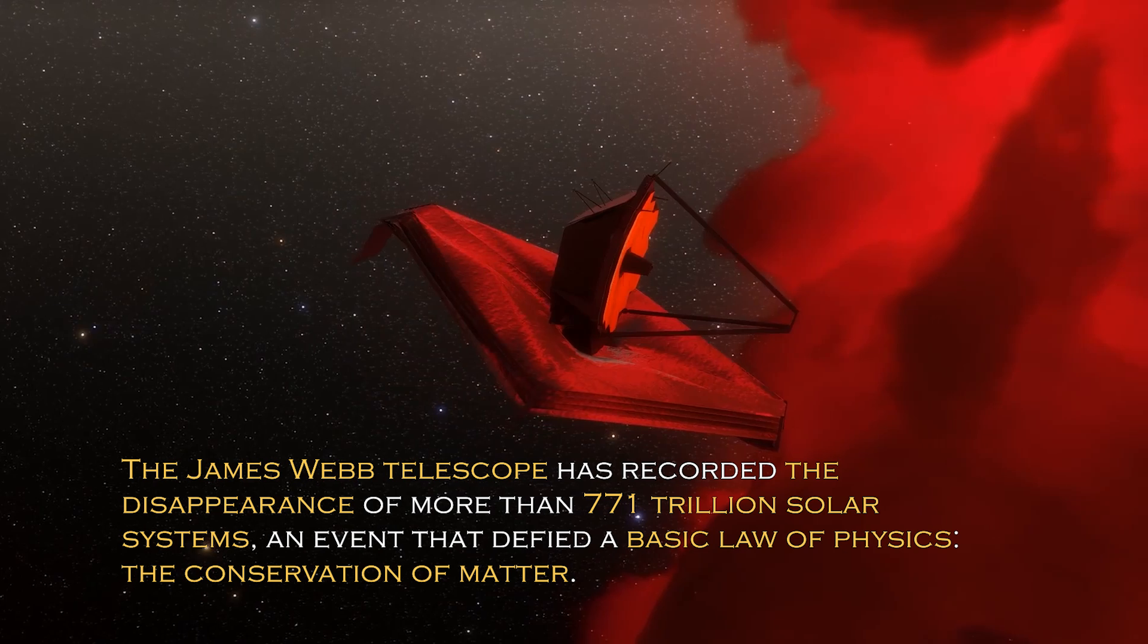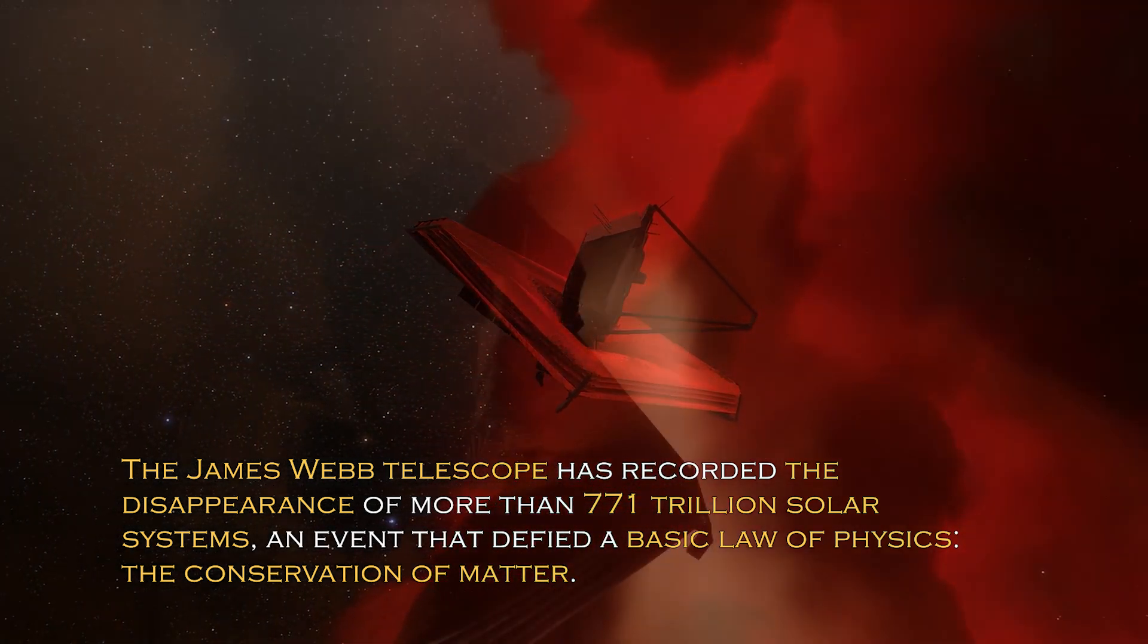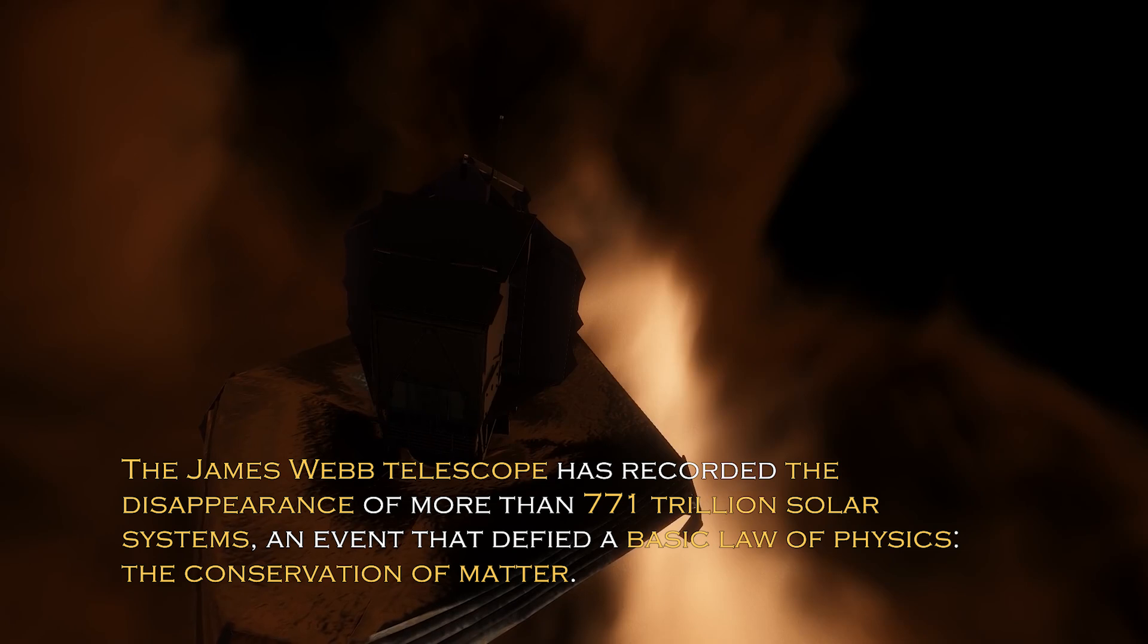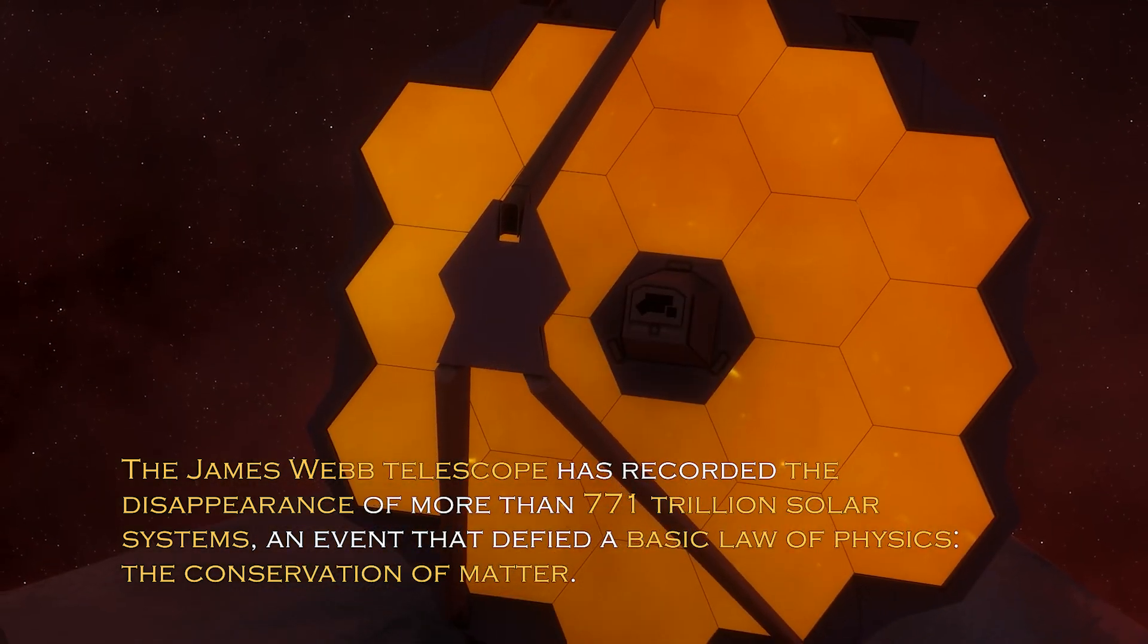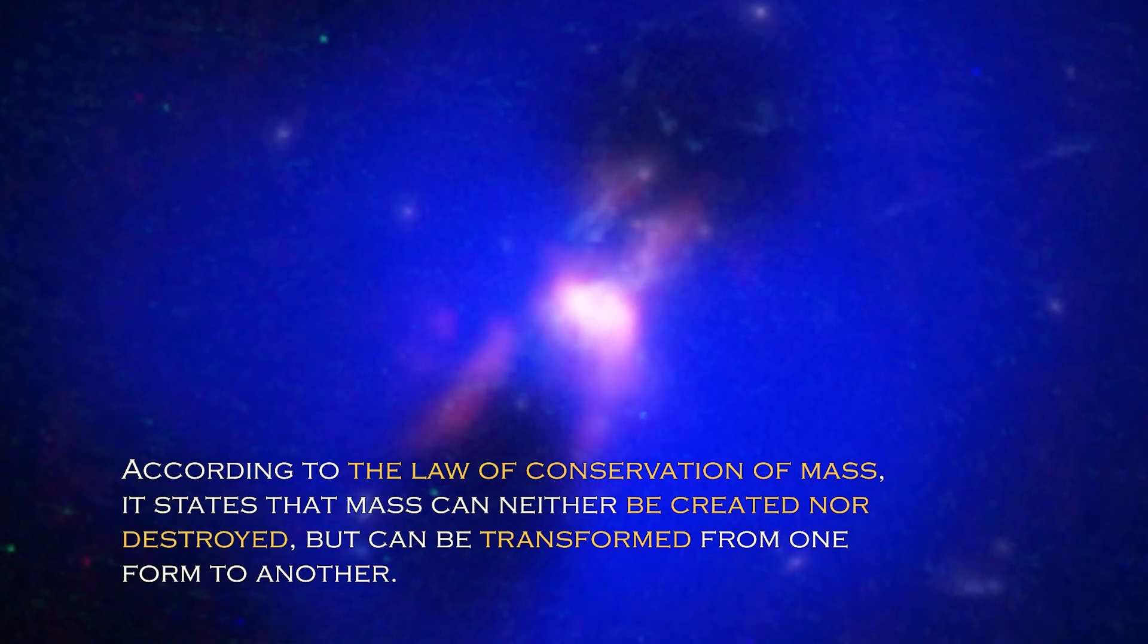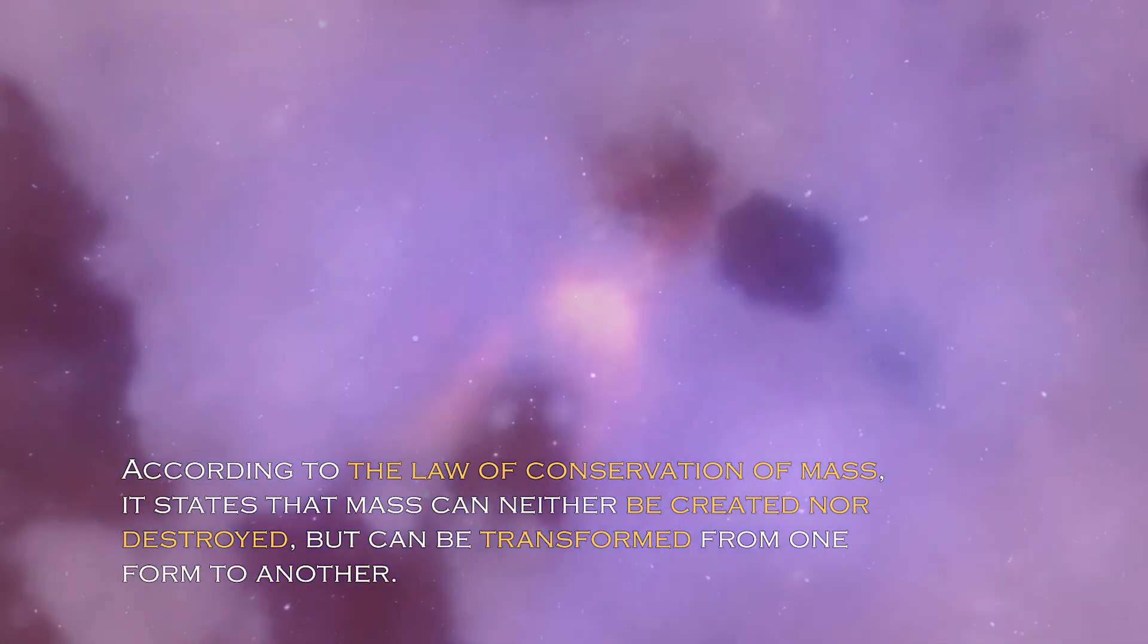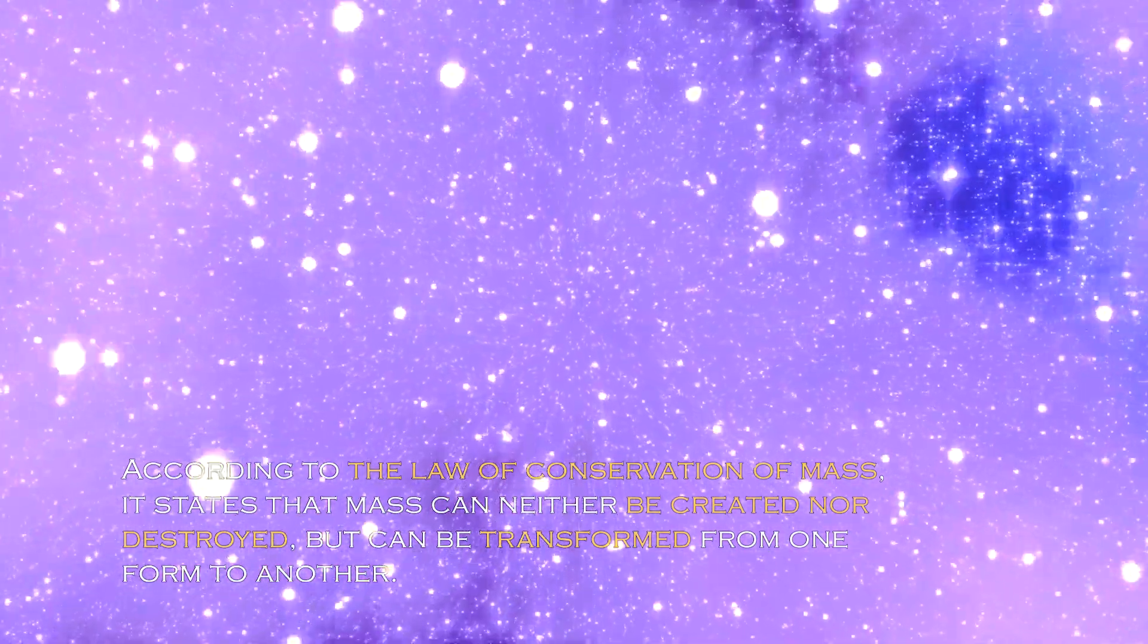The James Webb telescope has recorded the disappearance of more than 771 trillion solar systems, an event that defied a basic law of physics, the conservation of matter. According to the law of conservation of mass, it states that mass can neither be created nor destroyed, but can be transformed from one form to another.